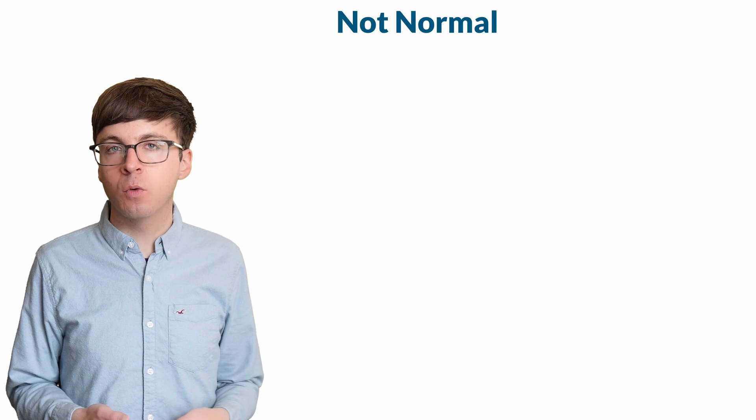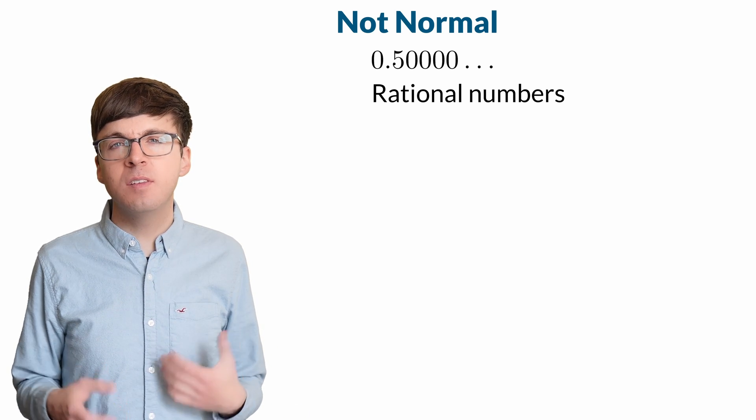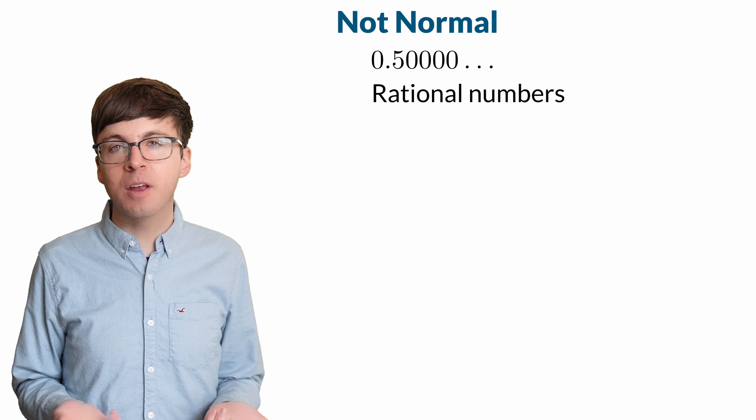Now some numbers are not normal, like 0.5. In fact, every rational number is not normal, since eventually its decimal expansion repeats.